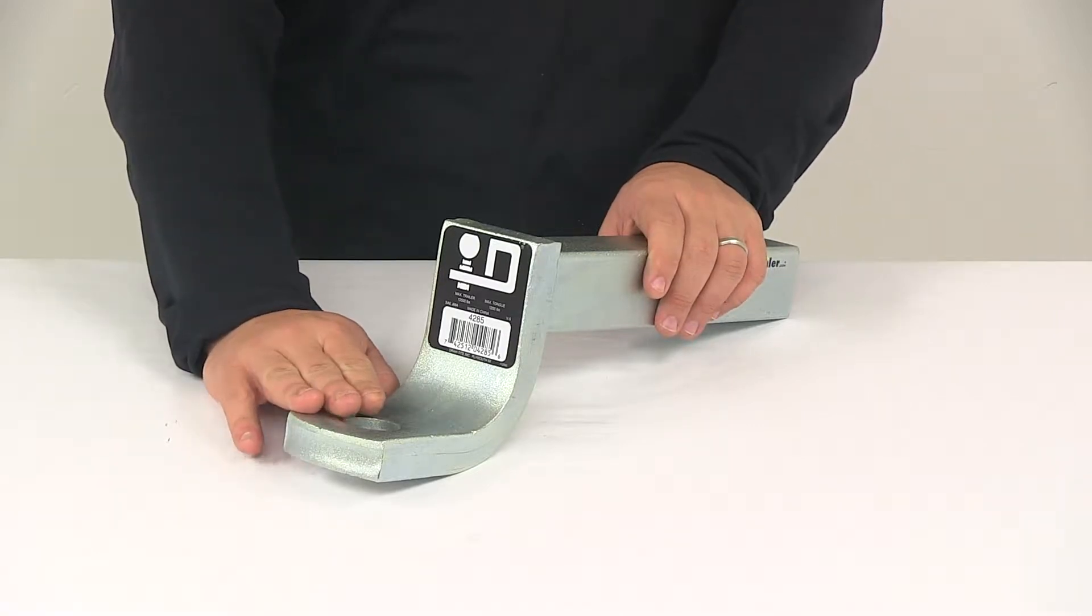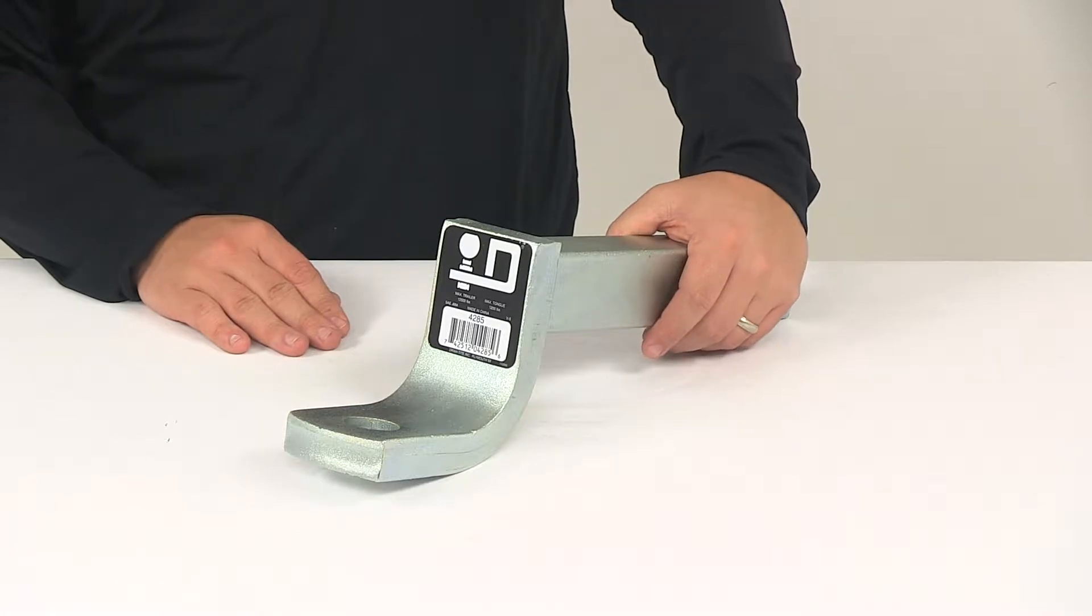Now a hitch ball is not included. It is sold separately, so if you're interested or in need of one, you can find them here at etrailer.com.